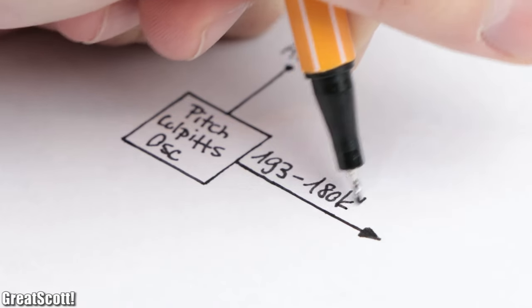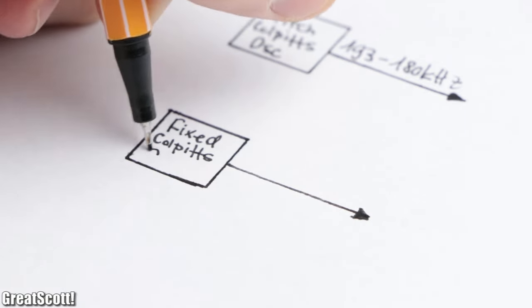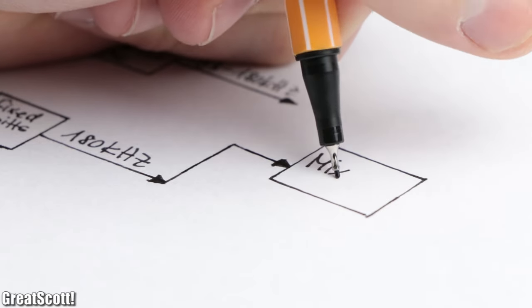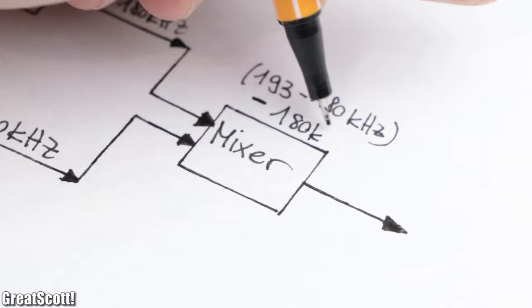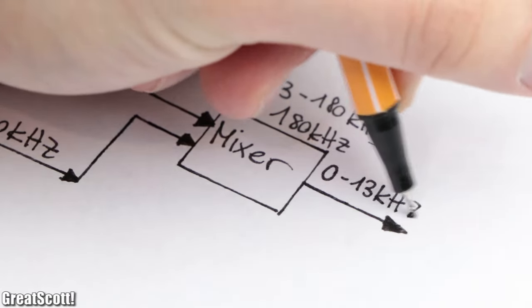To get rid of the high unhearable frequency though, you usually build up a second Colpitts circuit with fixed frequency, which you then send into a mixer along with the antenna influenced frequency in order to create a different signal which now only consists of the low hearable frequencies.